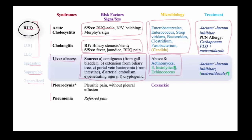Colitis from E. histolytica is usually a bloody diarrhea. Exposure to dogs especially is associated with Echinococcus liver abscesses, and that is distributed throughout the world, including Latin America, the Middle East, and Africa. One must consider these possibilities based on the appearance of the abscess.